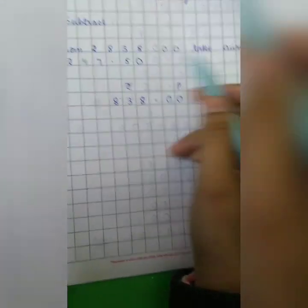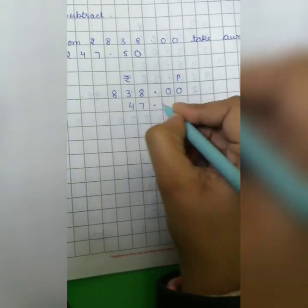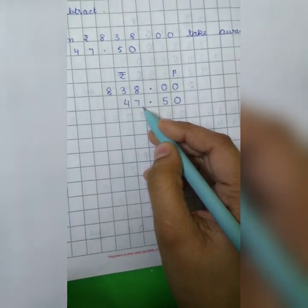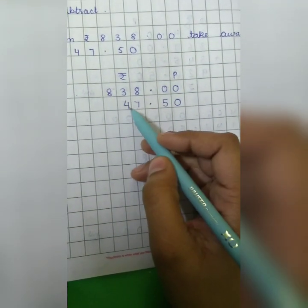Then we have to take away 47 rupees and 50 paise. So 47 rupees and 50 paise. So 47 is a two digit number. Take care of this thing. Don't write 4 under this 8 and 7 under 3. It will be wrong.